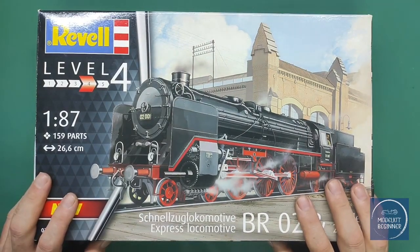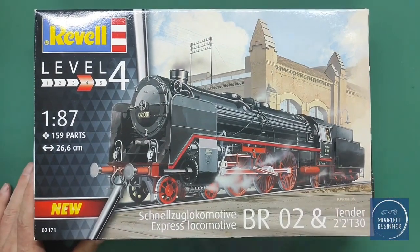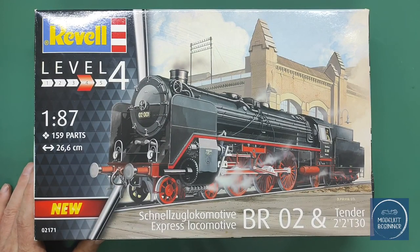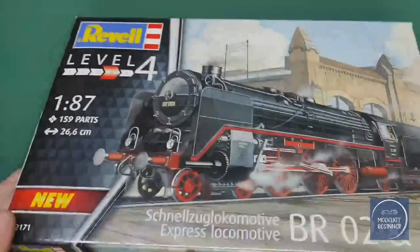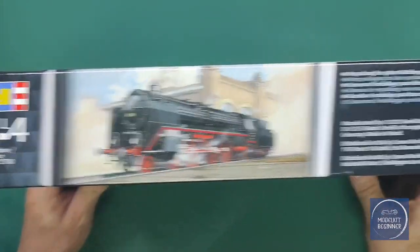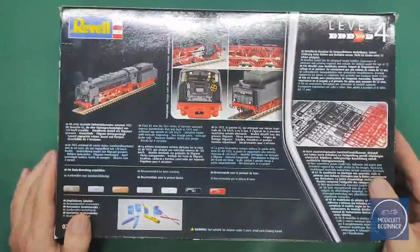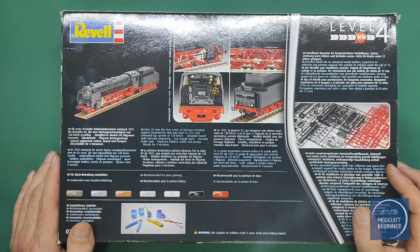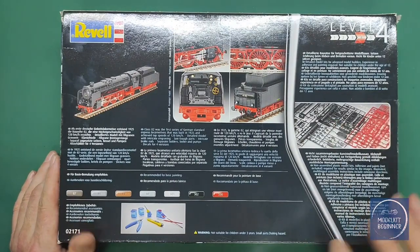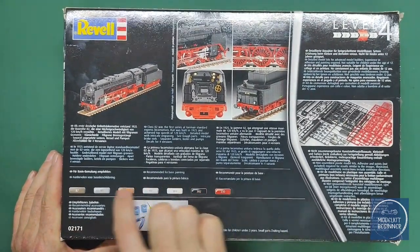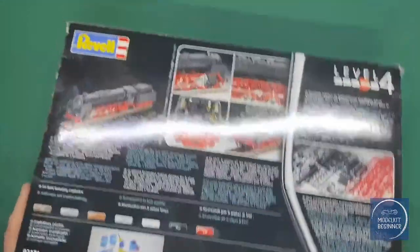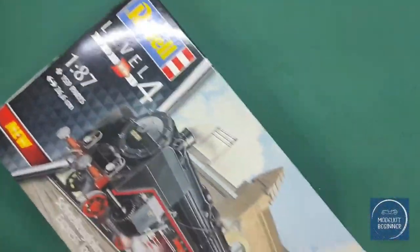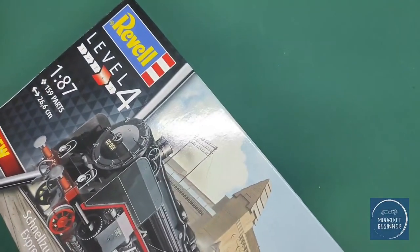Here we are down at the bench with the box of the 1:87 Revell BR02. On the side, it's just the box art and manufacturer information. The rear side gives you an idea how you could paint it in different variations, shows the sprues, and has a color callout of seven different colors. Revell Europe always has these floppy boxes which open on one side.